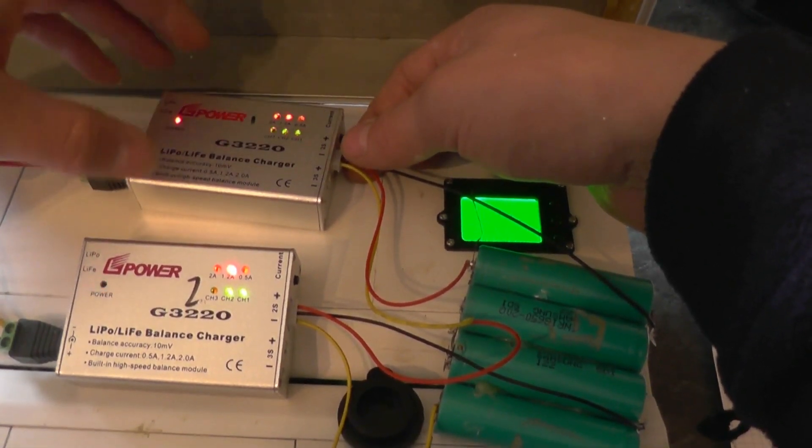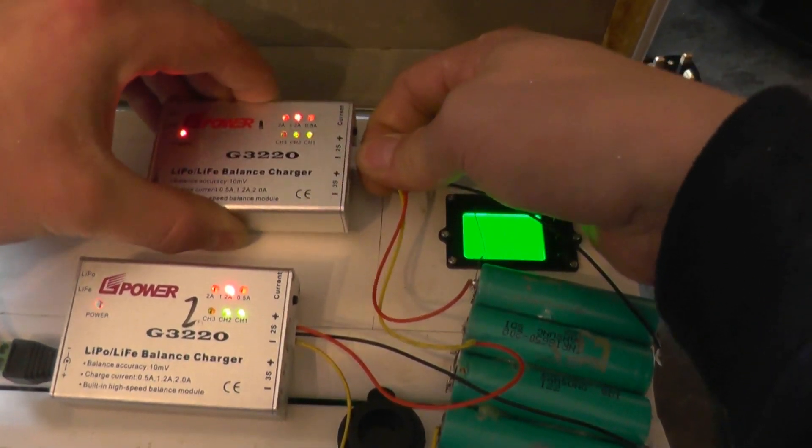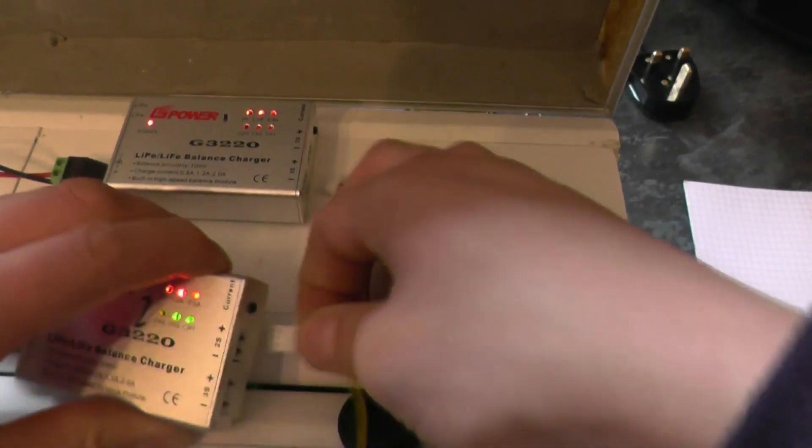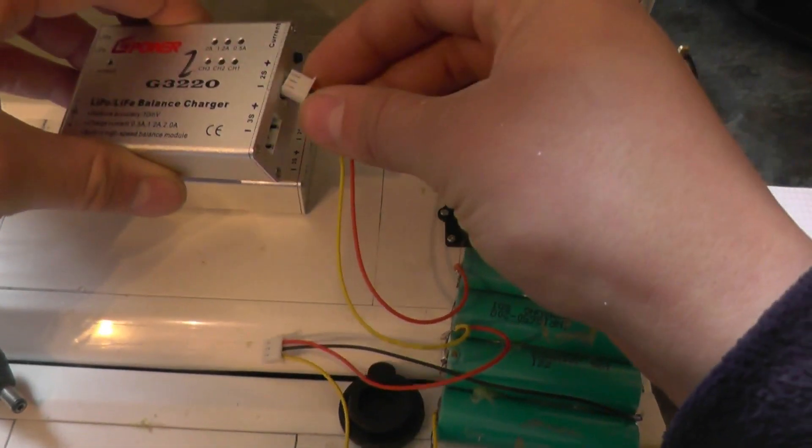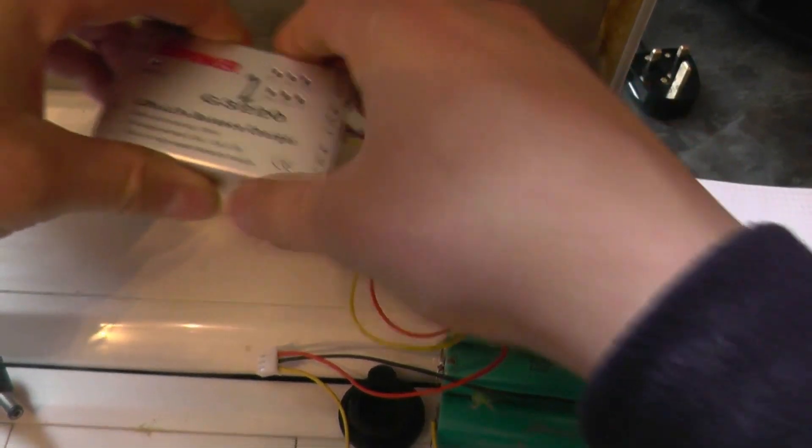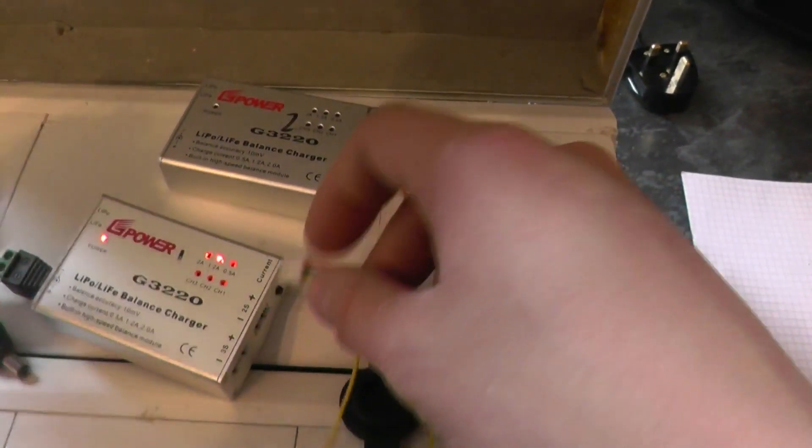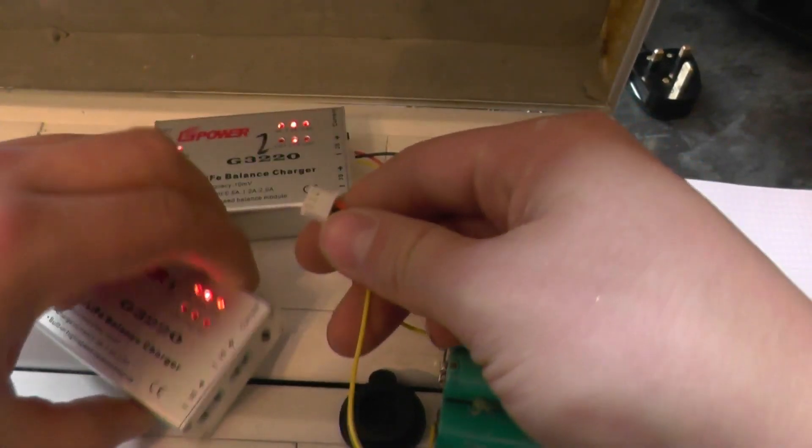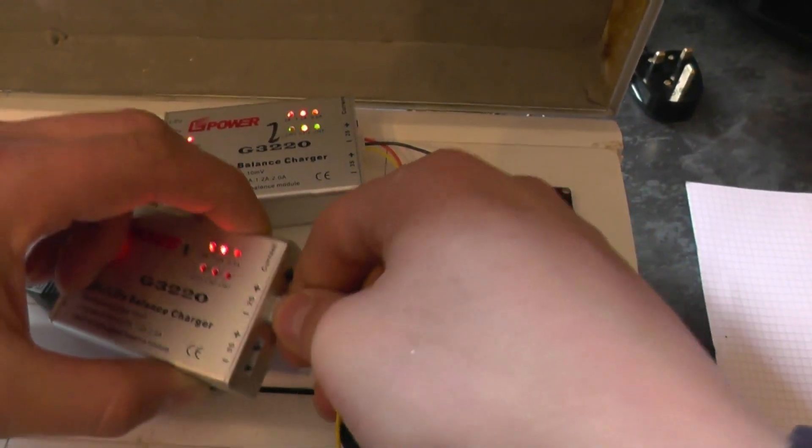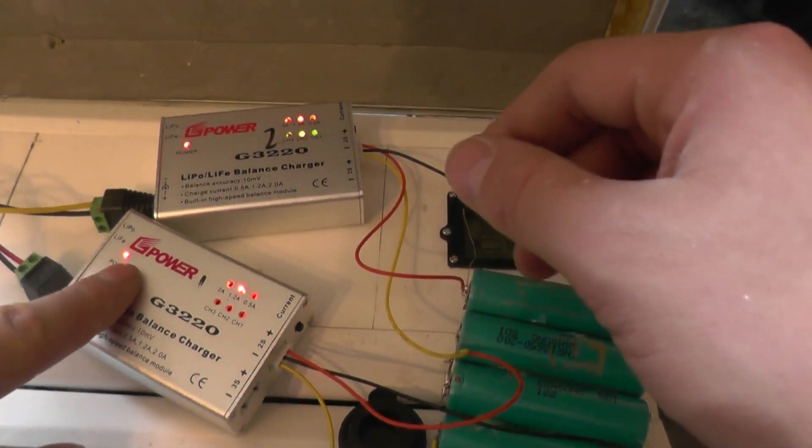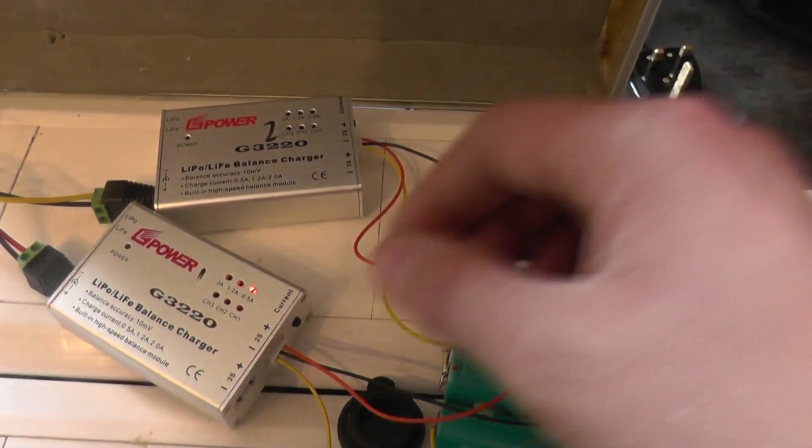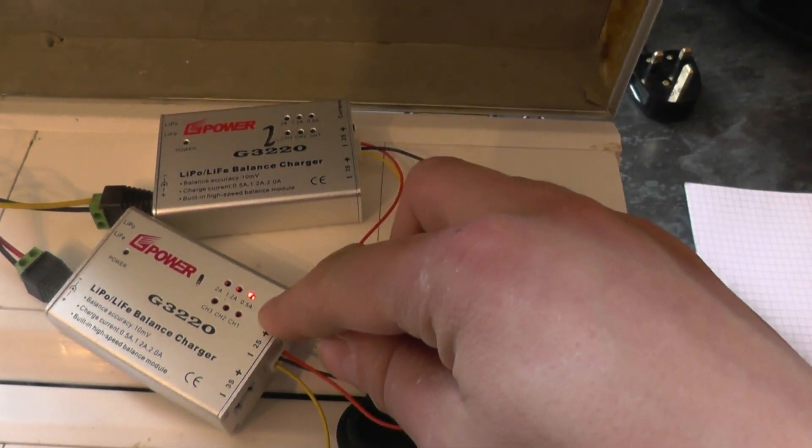But this one will proceed to charge. We swap these around the other way. And add power. It starts to charge and then the other one shows a fault. If I disconnect everything, this one then shows it's been back fed.